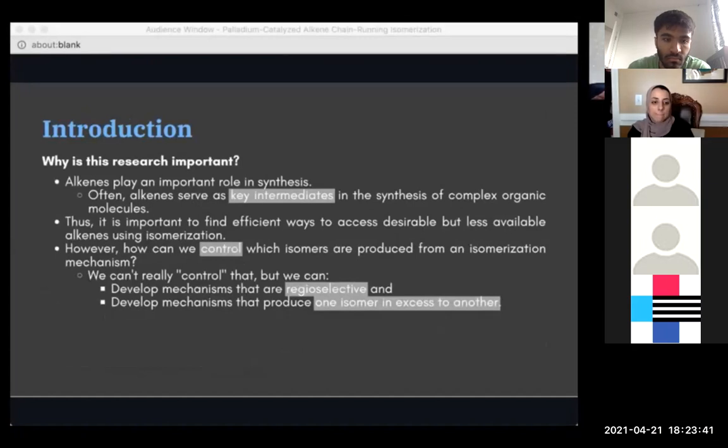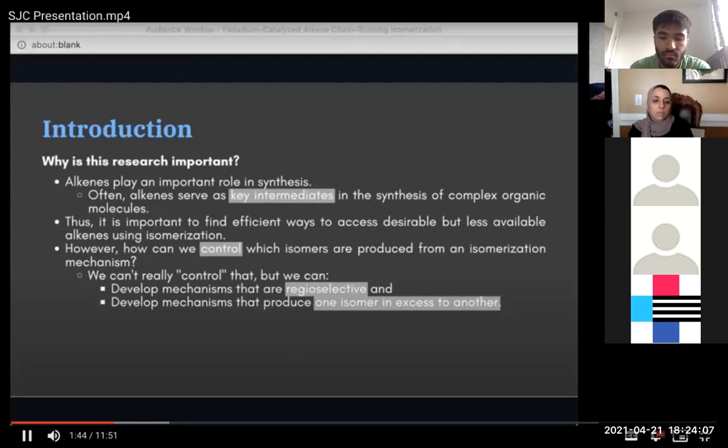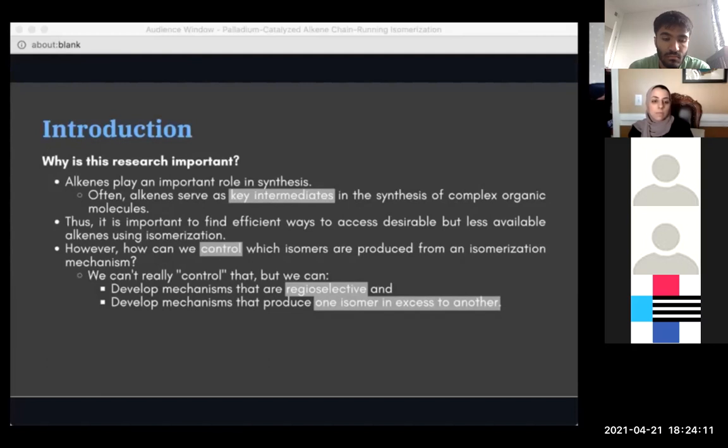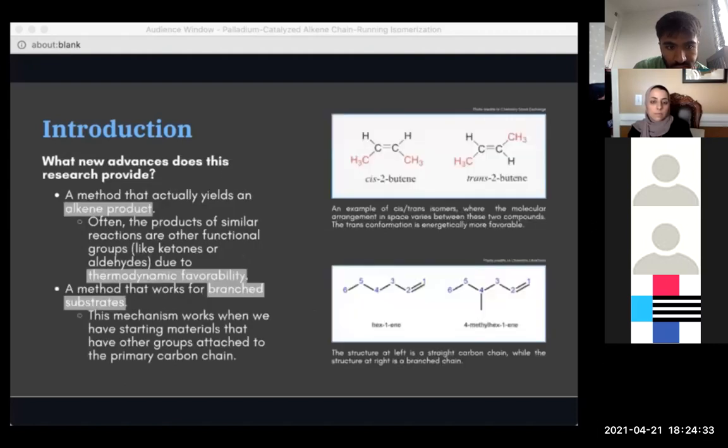Why is this research important? Alkenes serve as key intermediates in complex, multi-step organic syntheses, and we want to find ways to get to those intermediate stages and move past them in the most effective and cost-efficient ways. We're looking at feasibilities. Specifically, we want to find ways to isomerize readily available alkenes into more desirable but less accessible alkenes. There's a lot of factors that really play into this, including the fact that isomerization often results in multiple products based on stability and thermodynamics. The main question is, can we control that? The answer is yes and no. Chemists can develop mechanisms that are regioselective, meaning that the desired reaction occurs favorably at a specific location on the compound. Chemists can also develop mechanisms that favor one isomer over another. You would get a ratio of products and would have to use further lab techniques to identify that ratio.